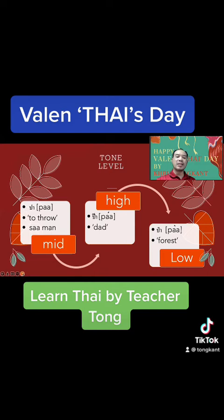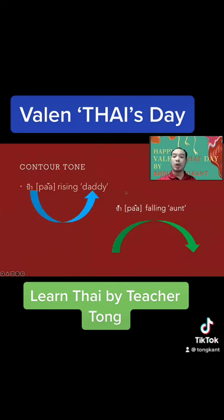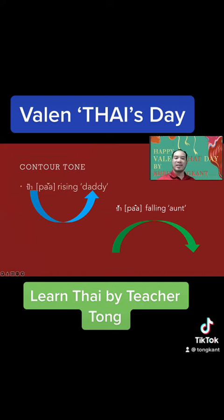Now the second class of tone: the contour tone. That means it's not only one sound. When you say 'paa,' it will be rising like this — 'paa, paa.' And then the next sound is falling, a high falling from high down — 'paa' means the elder aunt: 'paa.'